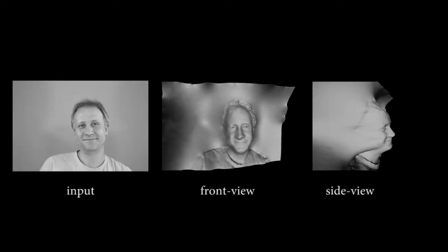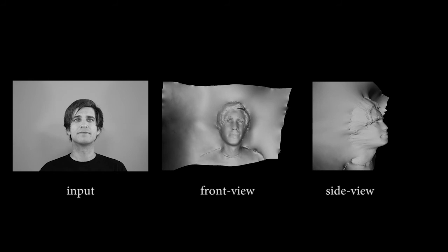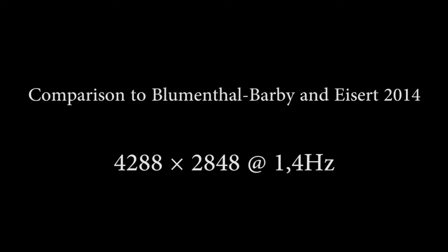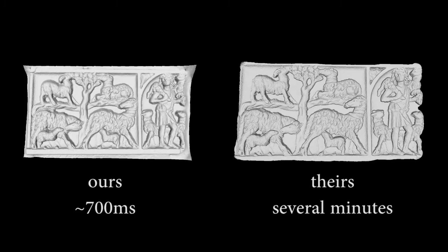Here we show results on the stereo pairs of Schneider and Eisert. Even on such high-resolution data, we are able to obtain reconstruction results at 1 Hz. We also show reconstruction results for the high-quality stereo pairs of Plumenthal-Barbie and Eisert. Our approach obtains geometry of similar quality. Note that our approach runs at a much higher frame rate.